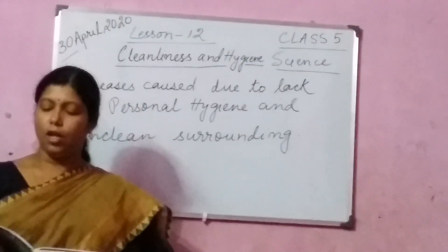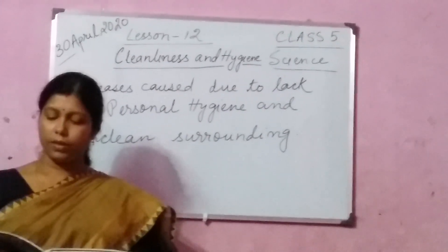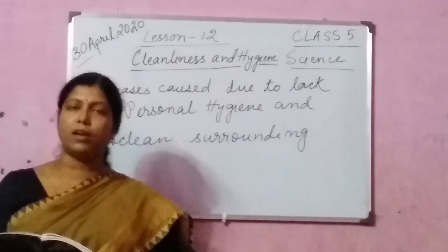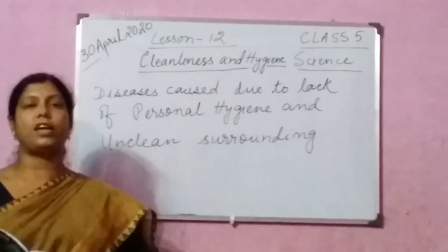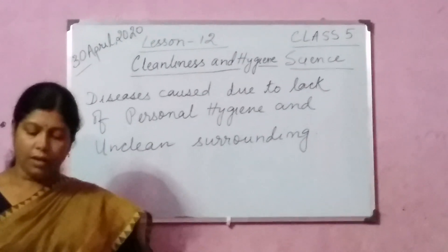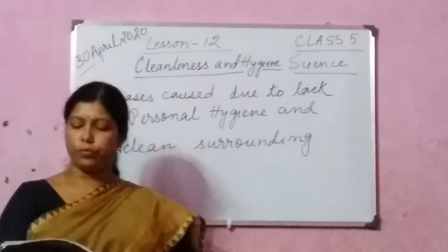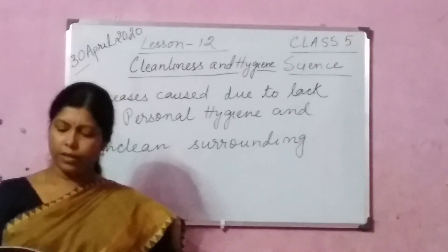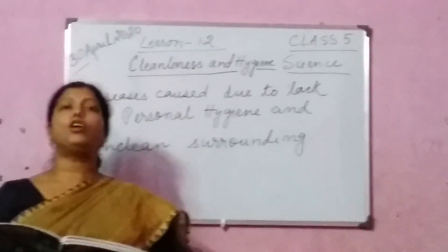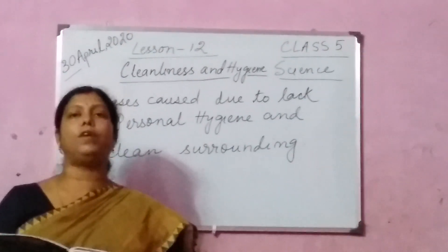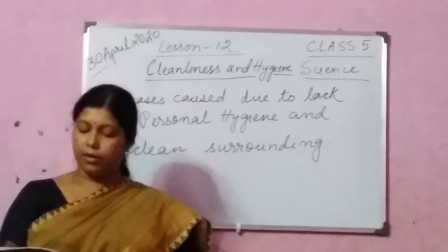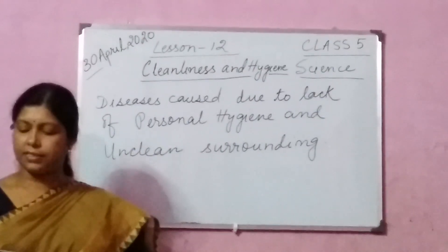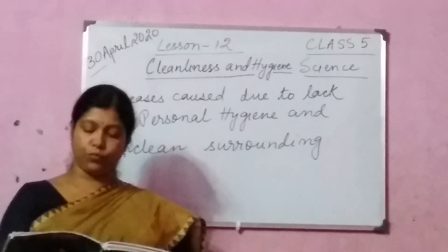Through unclean drinking water, diseases such as jaundice, typhoid, and cholera can be caused. Eating unhygienic food can cause typhoid and diarrhea. If you don't wash yourself properly and you wear unclean clothes, skin diseases may arise in your body, like scabies, ringworm, or athlete's foot.